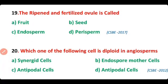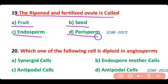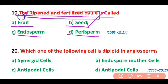Question 19. The ripened and fertilized ovule is called: fruit, seed, endosperm, or perisperm? The correct answer is option B. The ripened and fertilized ovule is known as a seed, while the ripened ovary is known as a fruit.